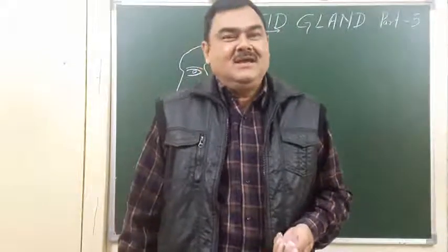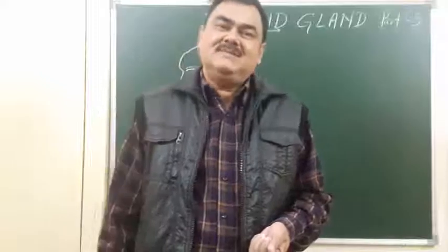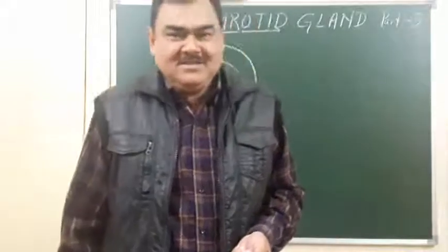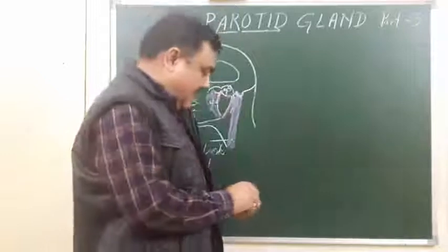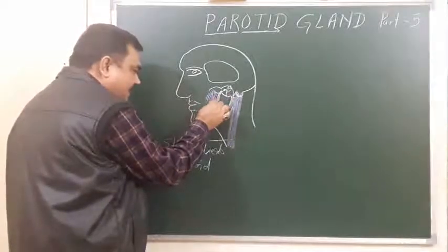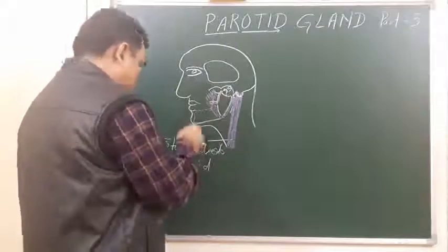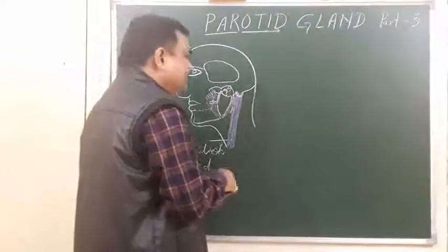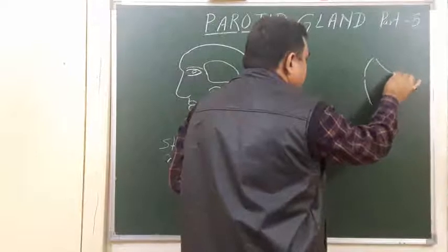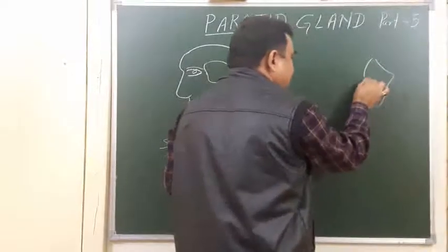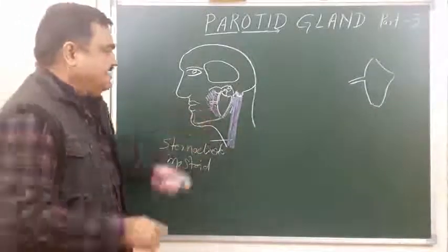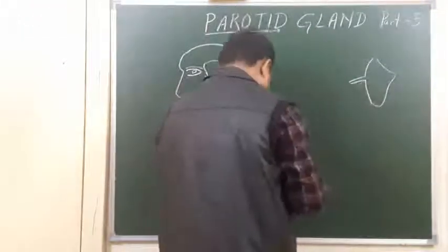Let's discuss the parotid gland, part 5. In this section we will discuss about the parotid duct. The parotid duct is a thick-walled tubular structure; its length is about 5 centimeters. It extends from the anterior border of the parotid gland. Here you can see the anterior border of the parotid gland — it passes forward and downward, initially passing over the masseter.